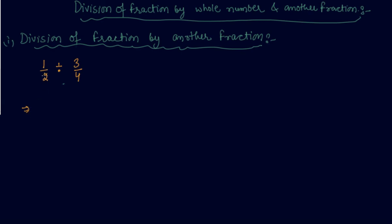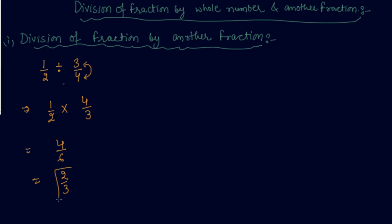The question is: divide 1 by 2 by 3 by 4. When I convert the sign of division into multiplication, I interchange the position of numerator and denominator — where the numerator was, the denominator will come, and where the denominator was, the numerator will come. This gives us 4 by 6, and on dividing numerator and denominator by 2, the answer is 2 by 3.